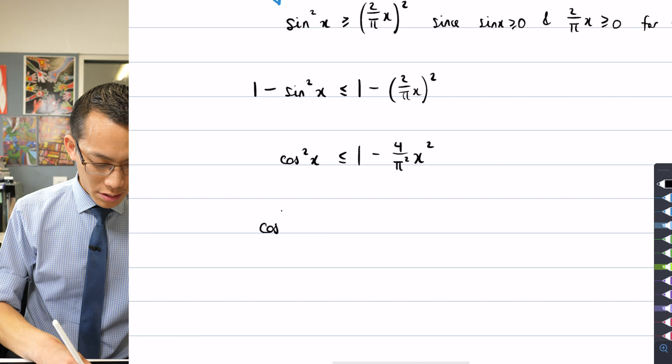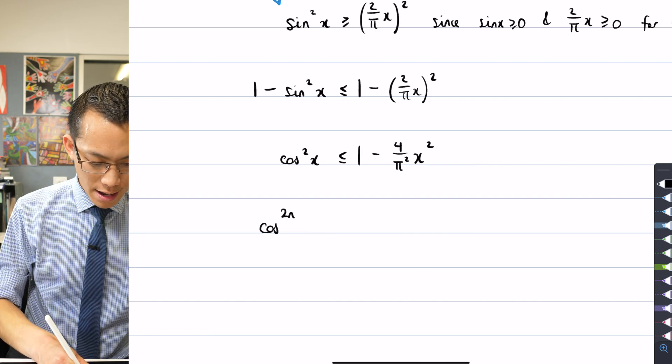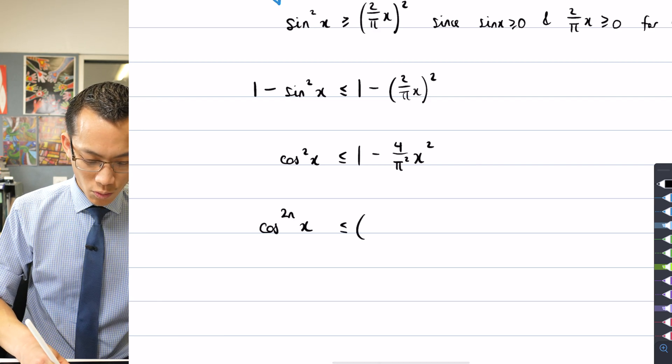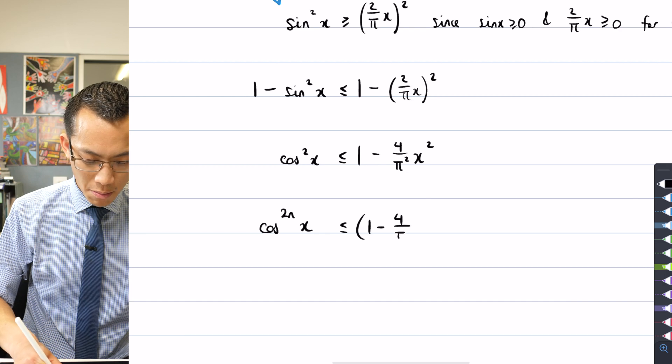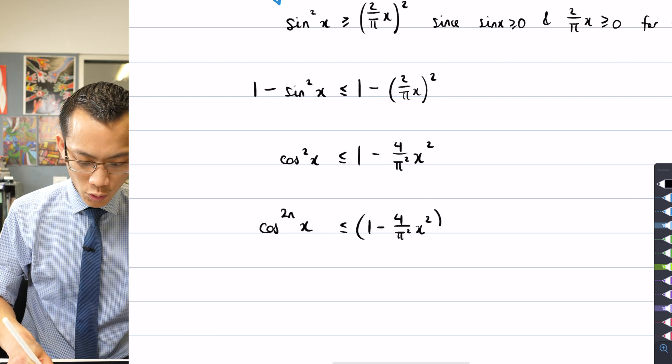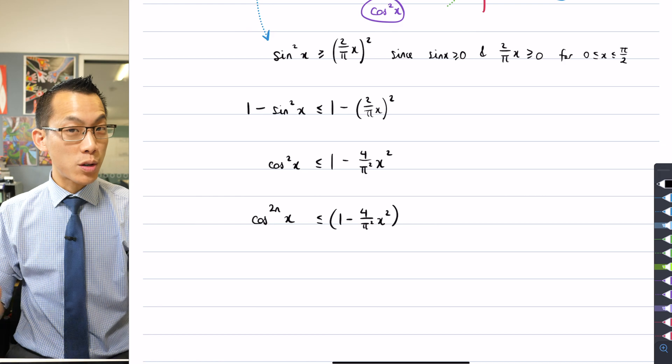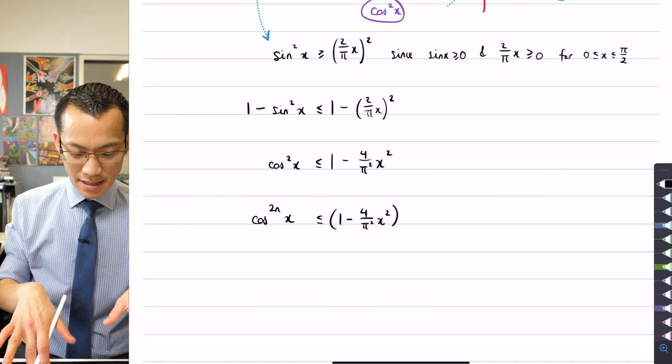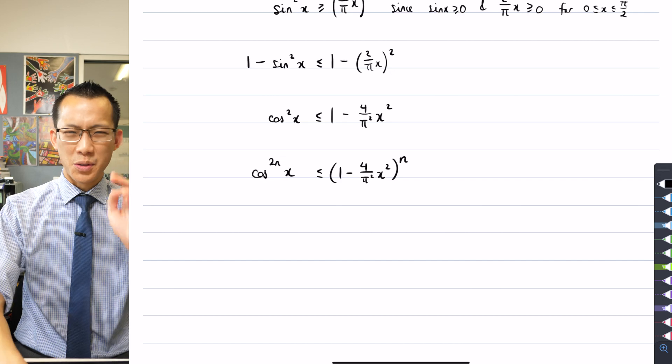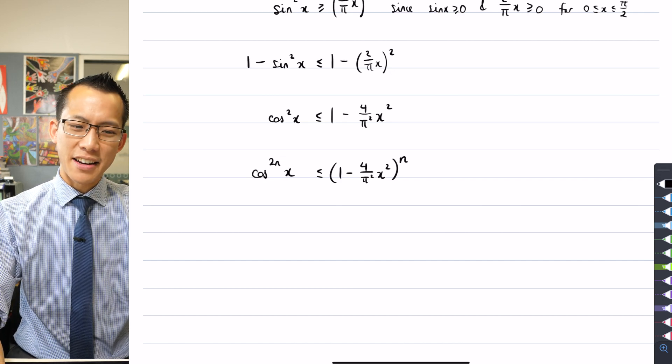So again, why don't I just keep on going through that? I'm going to raise both sides to the power of n. That'll give me cos to the 2n x, it's less than or equal to 1 minus 4 over pi squared x squared, and by the way, we've also got qualities about n that make this a legitimate thing to say to power n. I'm not doing any, like, square roots, cube roots, that kind of thing.